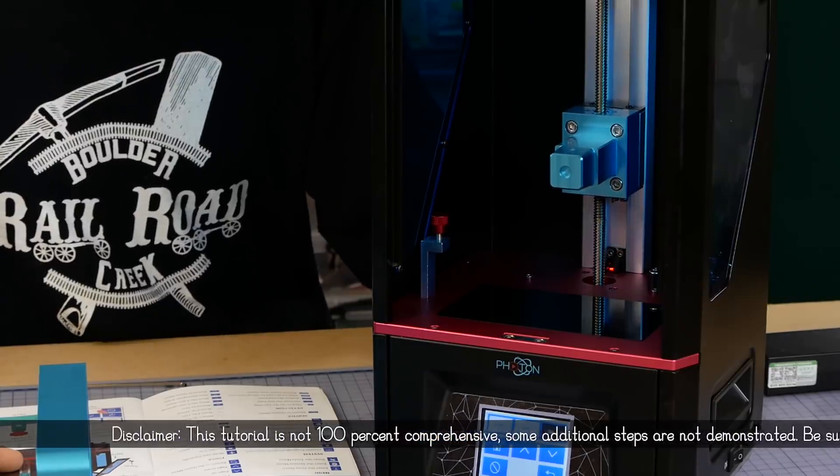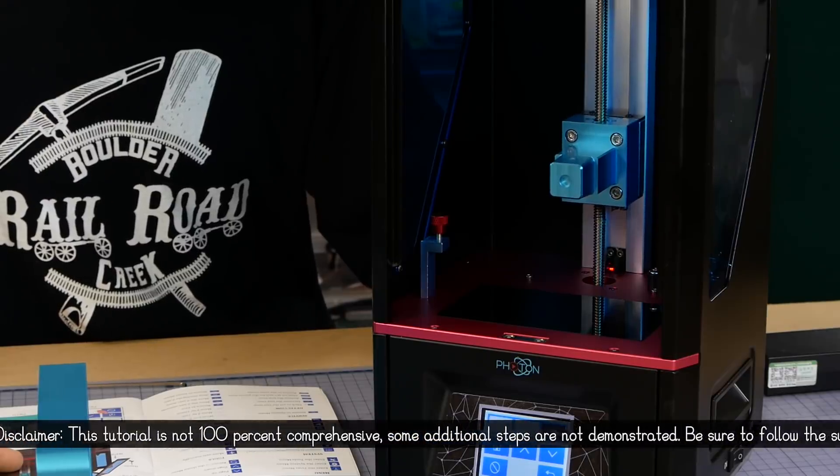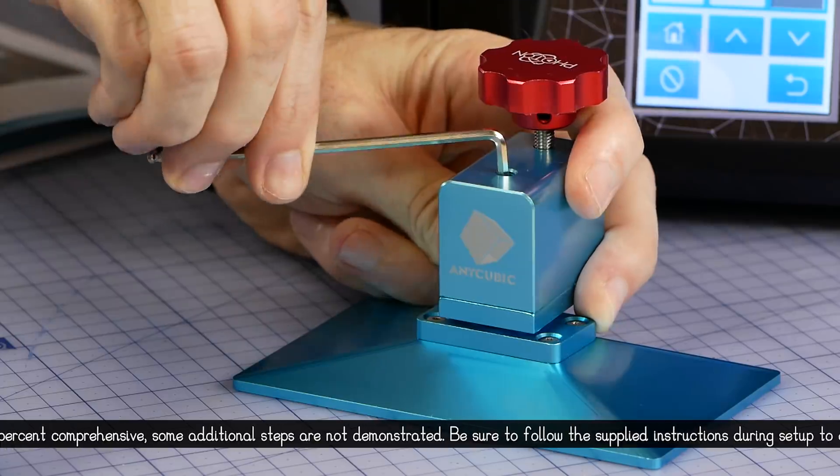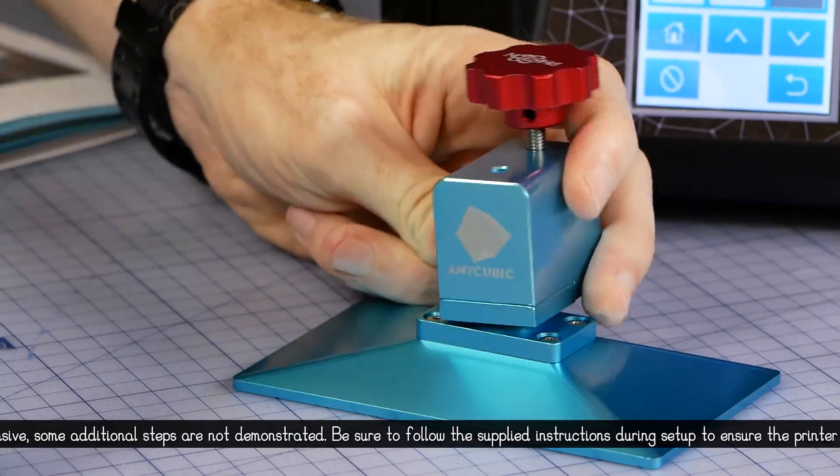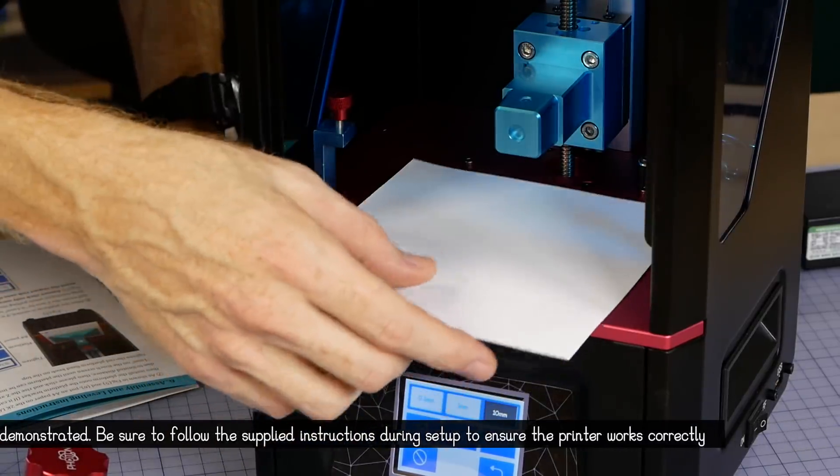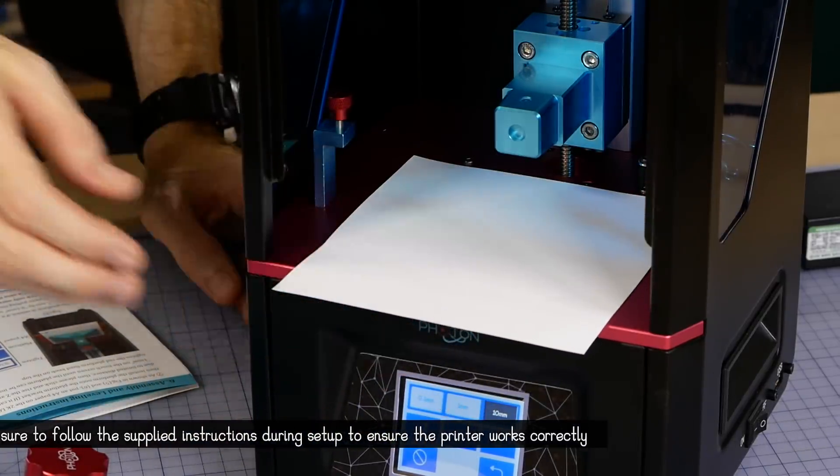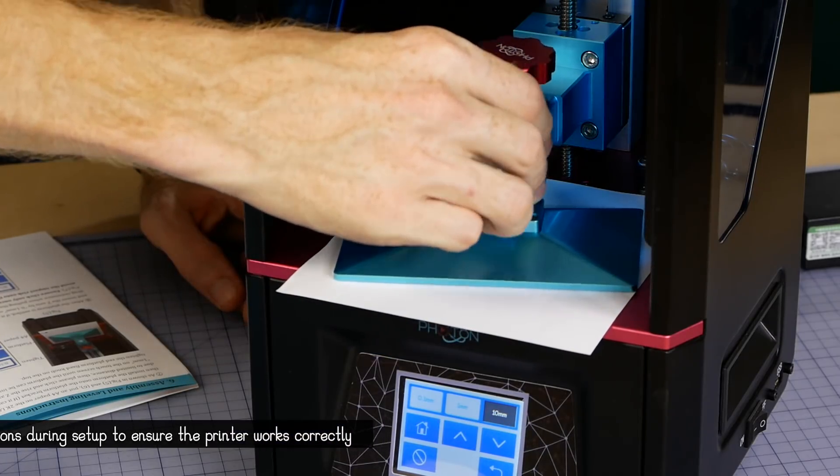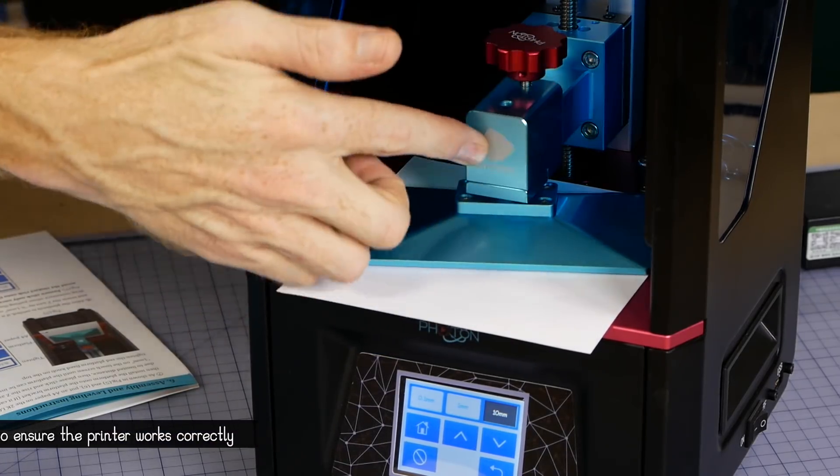To level the bed it's as simple as lowering the build platform mounting arm. Next loosen the build plate using the supplied allen key so it can move and tilt freely. The distance between the build plate and the LCD screen is about the thickness of a piece of paper. With the paper in place carefully reattach the build plate and test that the paper can move freely.